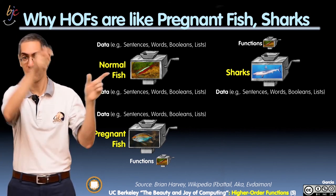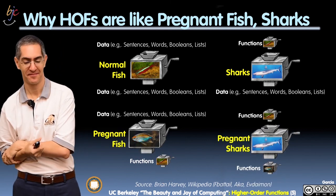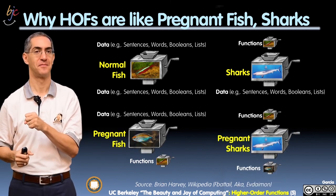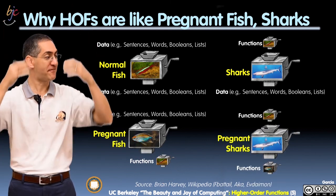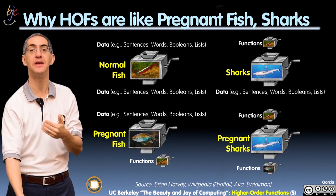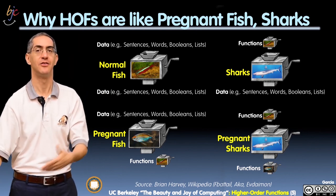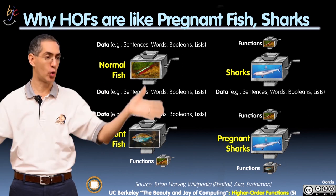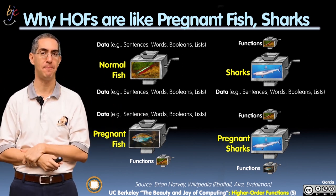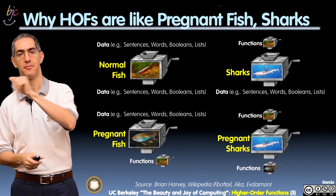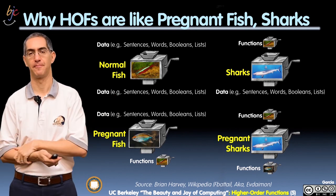And finally, the four, the other, the missing corner, pregnant sharks, in which the input might be a function, and the output might be a different kind of function. So that's a kind of, you know, and that's really cool. That's really funny. We'll see that too today. So fish, pregnant fish, sharks, pregnant sharks.